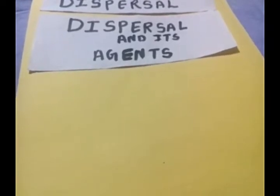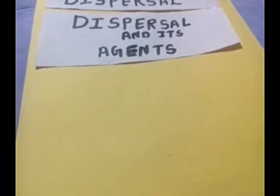The process of dispersal is carried out by agents like wind, water, animals, and explosion. Agents are materials which help seeds move from one place to another. In order to facilitate dispersal by different agents, many seeds and fruits have developed special features.